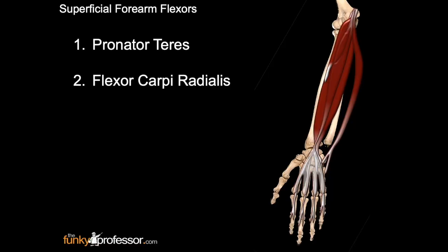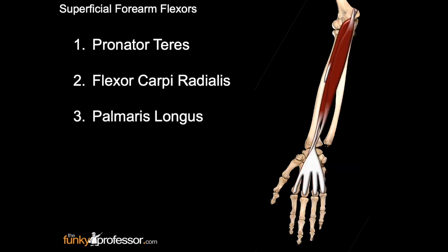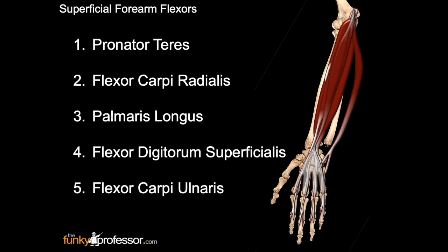So the superficial forearm flexors include pronator teres, flexor carpi radialis, palmaris longus, flexor digitorum superficialis, and flexor carpi ulnaris.